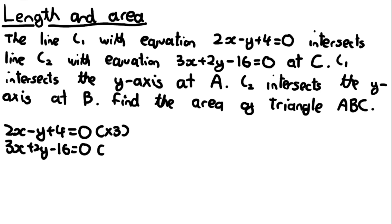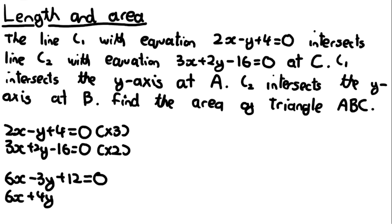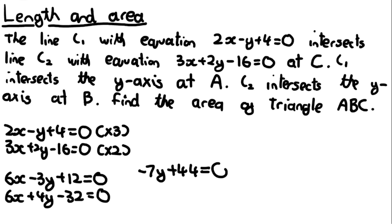Multiplying the first equation by 3 gives 6x minus 3y plus 12 equals 0, and multiplying the second by 2 gives 6x plus 4y minus 32 equals 0. Subtracting the bottom from the top, the 6x cancels to give minus 7y plus 44 equals 0, so minus 7y equals minus 44, meaning y equals 44 over 7. That's the y-coordinate of C.